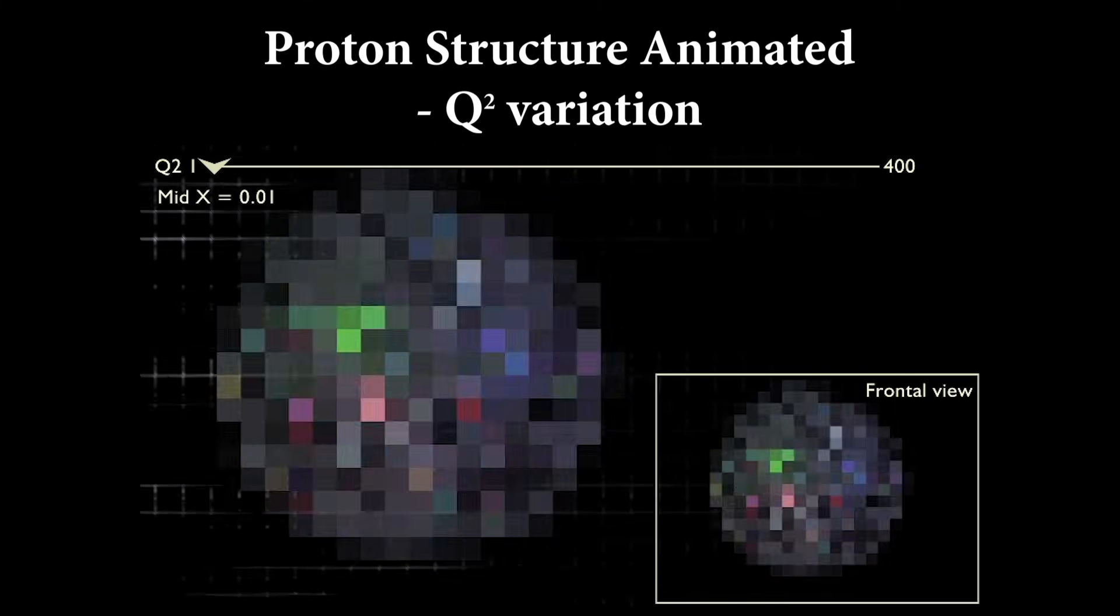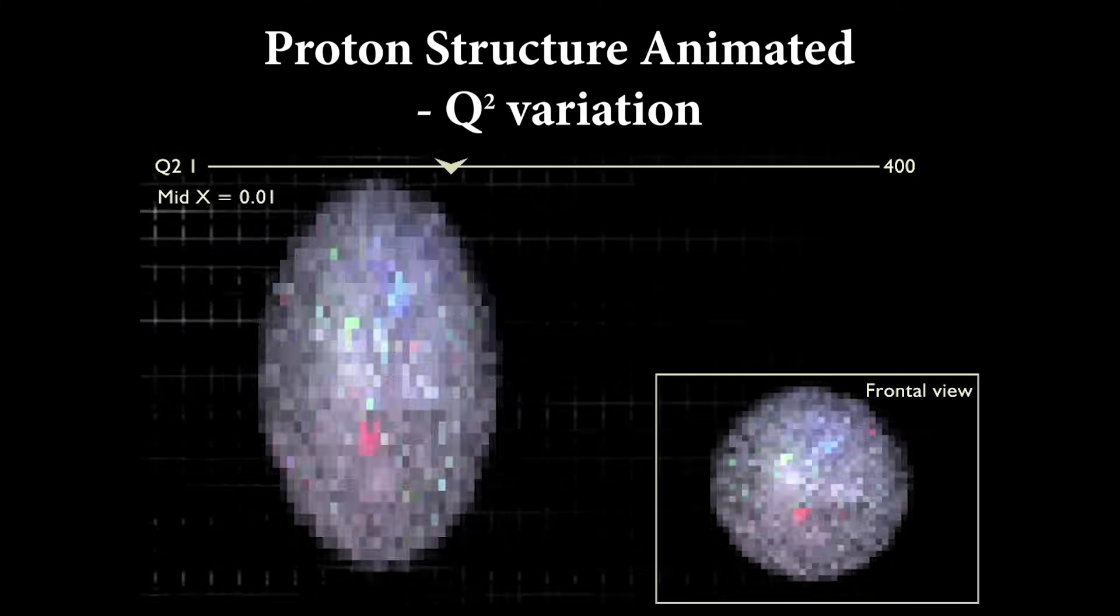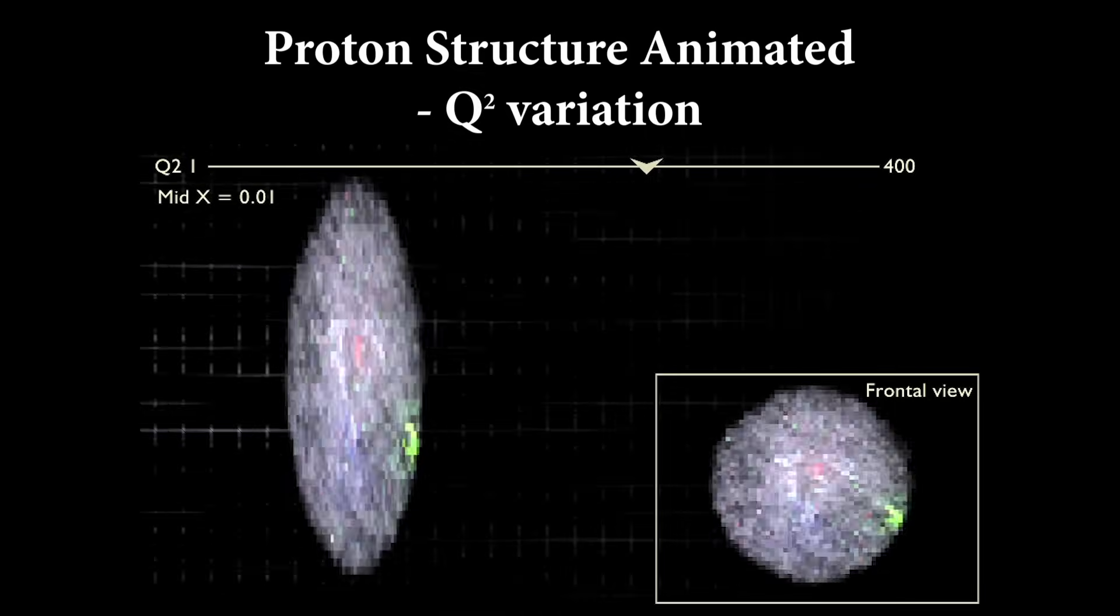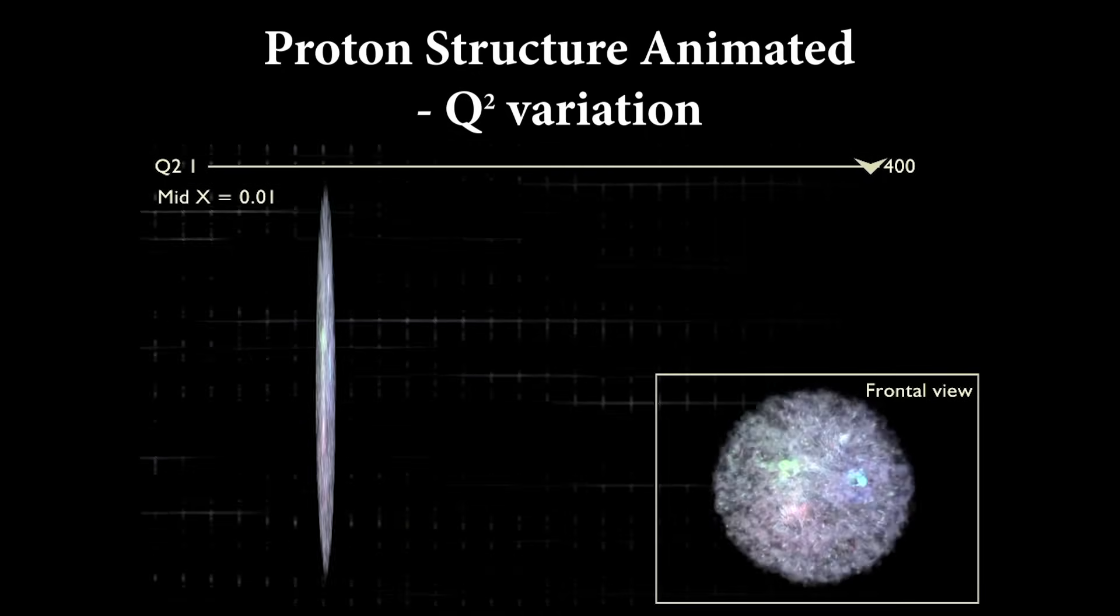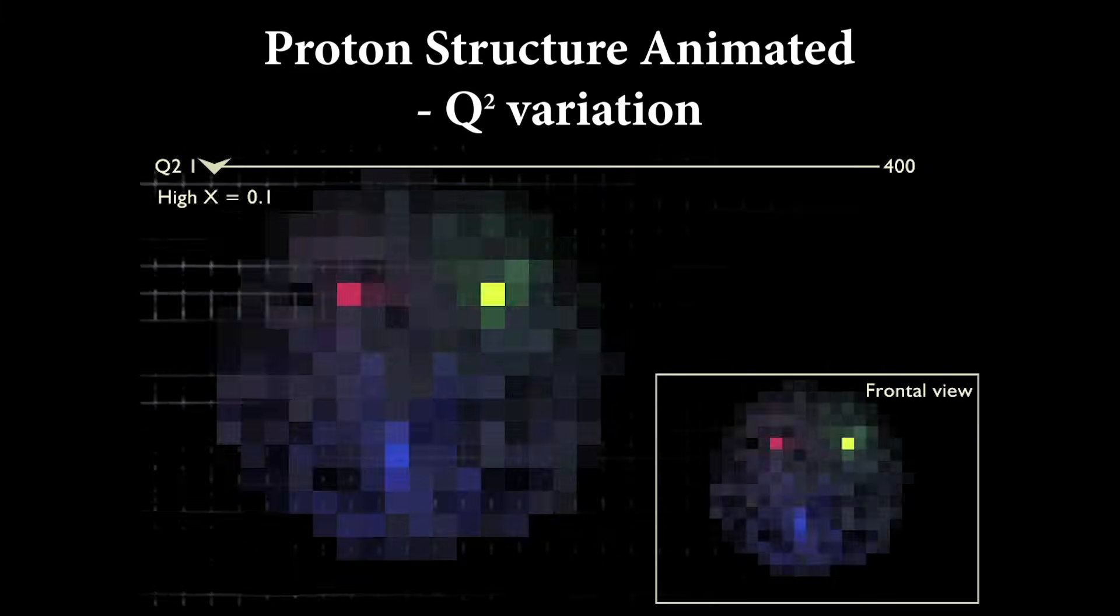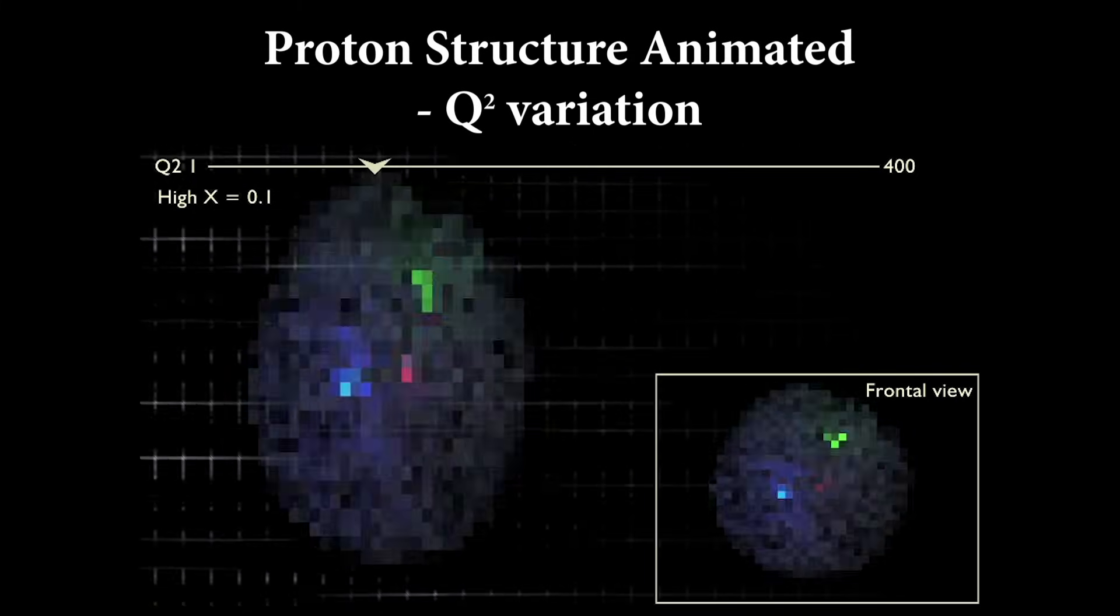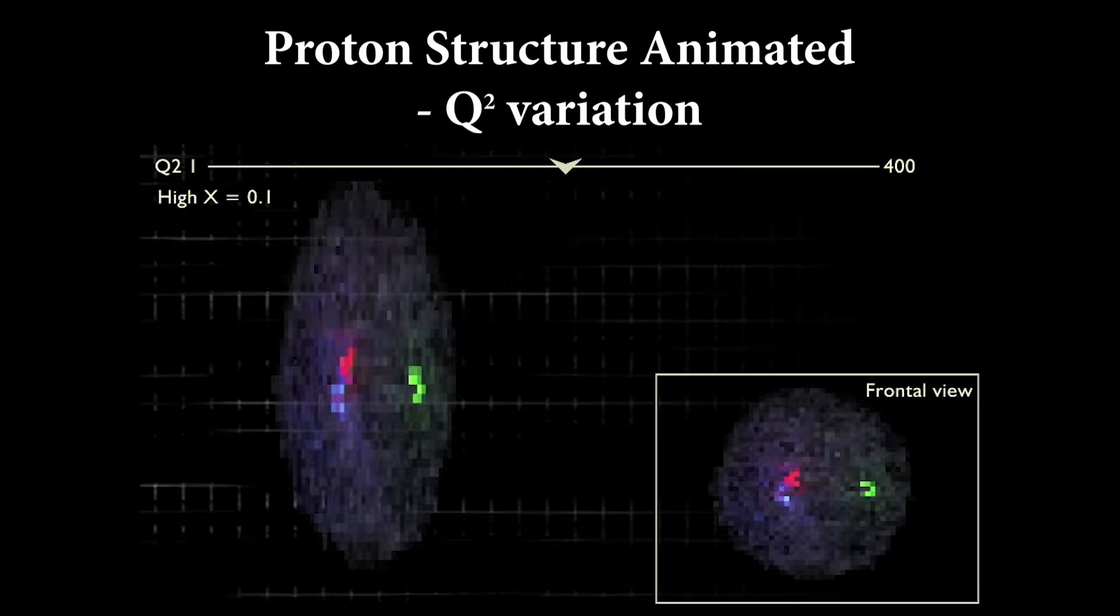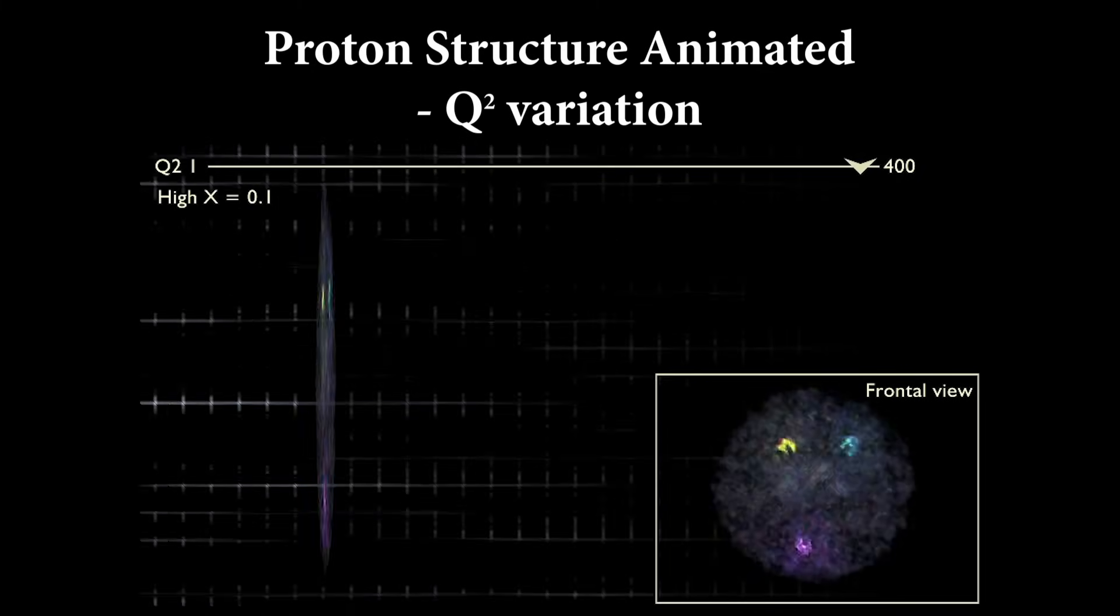At medium X, we see again the details increase and both the density of the gluons and quarks sea increase with Q squared, the gluons faster. At high X, we see a coarse structure reflecting two up and one down quarks, a structure that becomes more evident at higher Q squared, with also more gluons and quarks sea appearing with Q squared as driven by QCD.